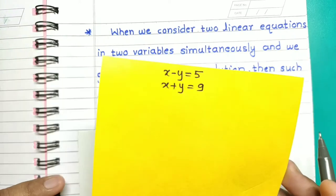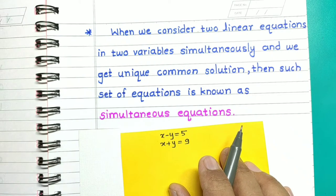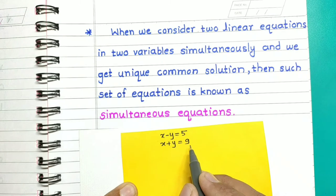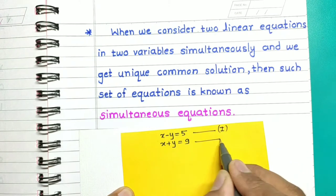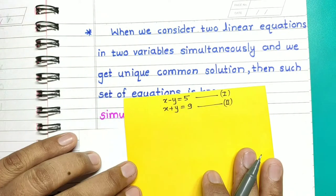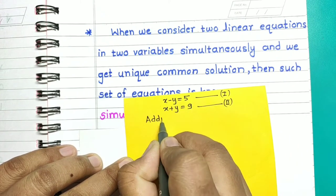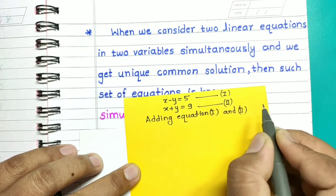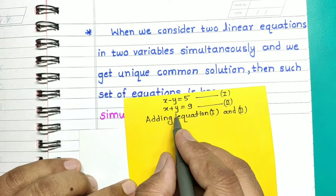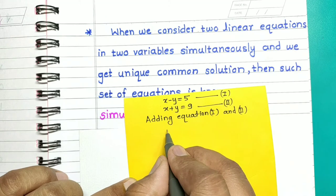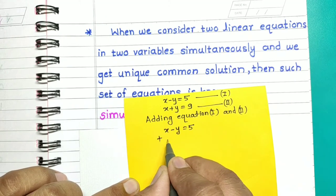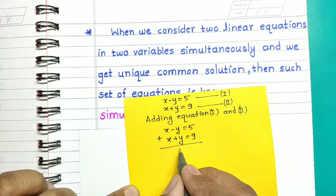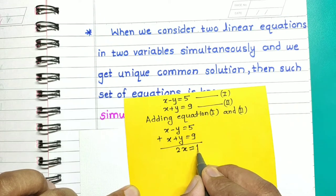Let us apply another method to solve the same simultaneous equations: x minus y equals 5 (equation 1) and x plus y equals 9 (equation 2). We add these two equations — adding means adding their LHS and adding their RHS. So x minus y plus x plus y equals 5 plus 9. The y terms cancel, giving 2x equals 14.